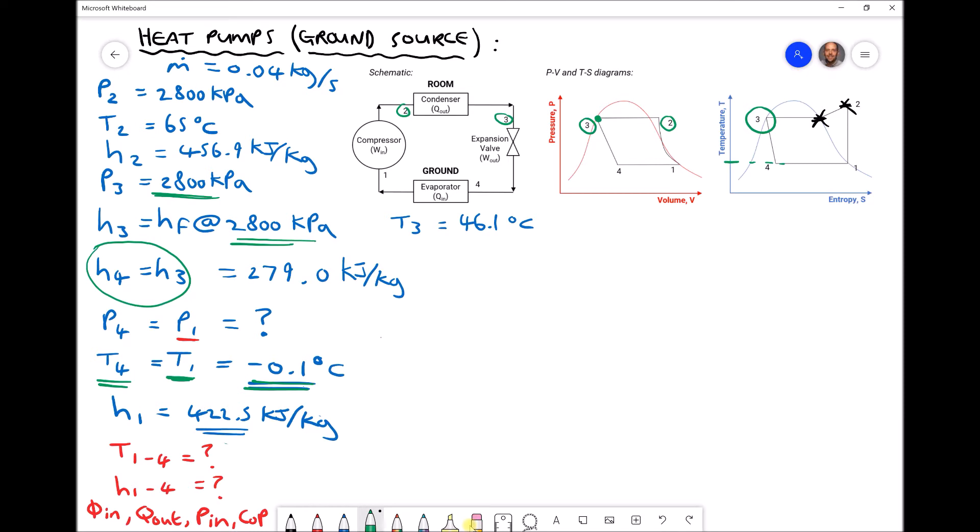As is evident from this type of question, we end up with a lot of variables, but we've listed our T3 temperature and we've listed our H3 enthalpy of 279.0 kJ per kilogram.